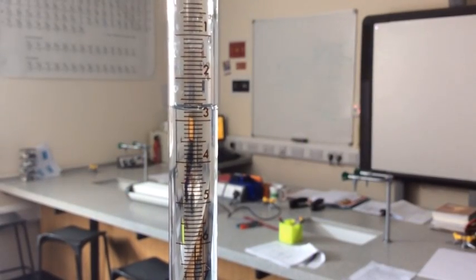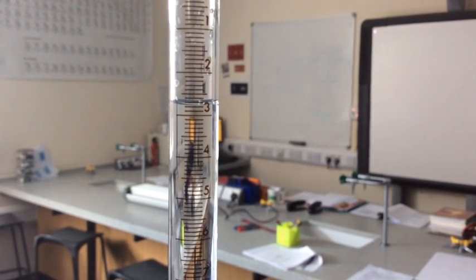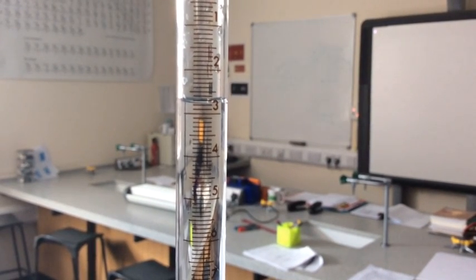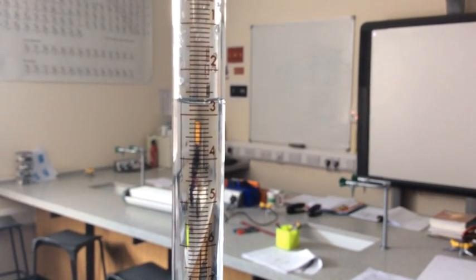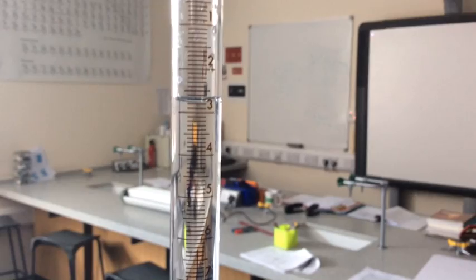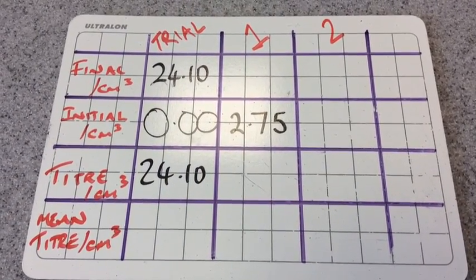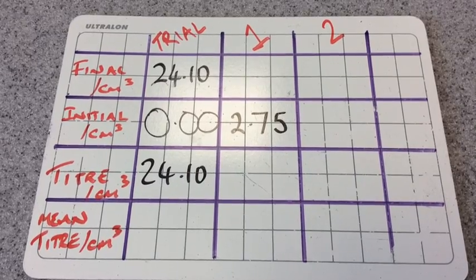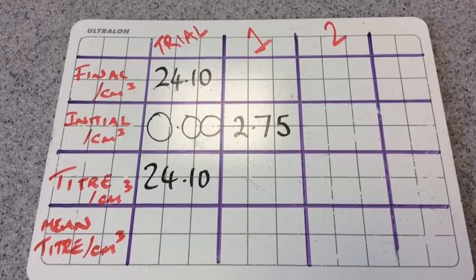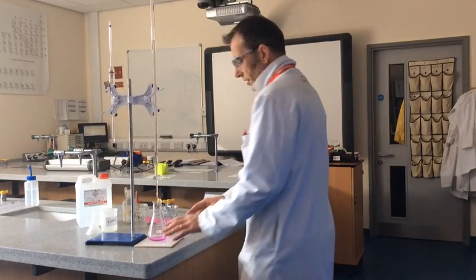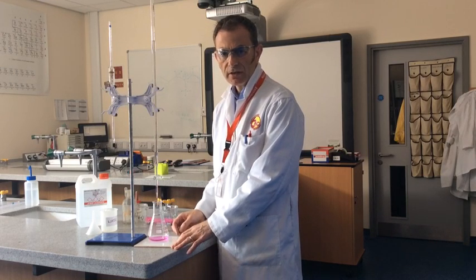So I've filled the burette up for the second titration. So this is going to be our first accurate one. And you can see there the meniscus is just below the 2.7 line. So that will be recorded as 2.75. And the reason I've done that is because I want to make the point you don't have to start at 0.00. As long as you know where you start, you can always work out the difference. So I'm ready to start the second titration now. Remember that's the first accurate titration.